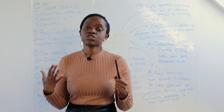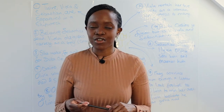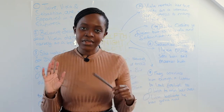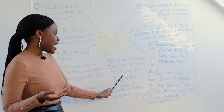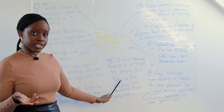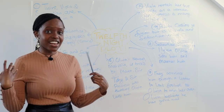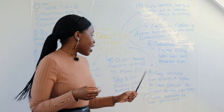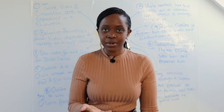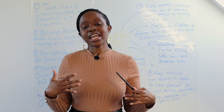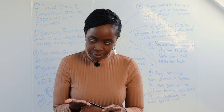There is also Sir Toby Belch, Olivia's drunken uncle, who is trying to hook Olivia up with Sir Andrew. Maria, along with Sir Toby and Sir Andrew, decides to trick Malvolio into thinking that Olivia loves him. He is also convinced to dress up in a certain way after reading a letter which he believes is from Olivia, but is actually written by Maria.